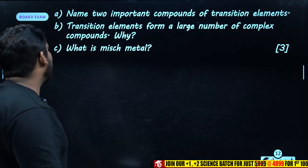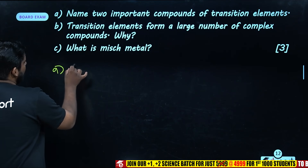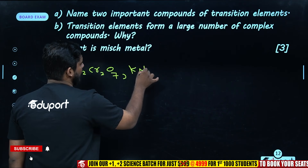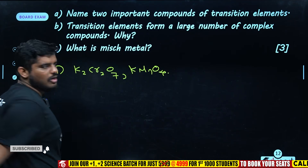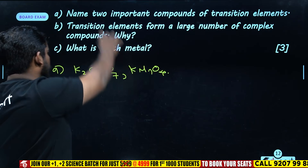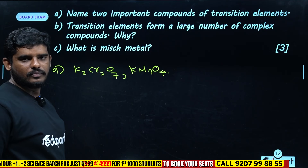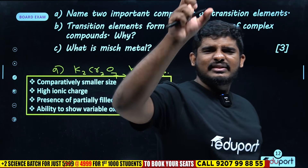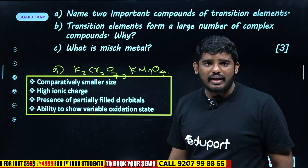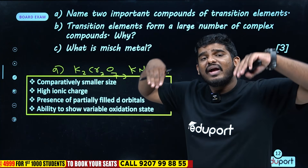Name two important compounds of transition elements: Potassium dichromate and Potassium permanganate — very important compounds. There are also copper sulfate and nickel sulfate. Transition elements form a large number of complexes because they have small size, high charge, and partial d-electrons, and they exhibit variable oxidation states.